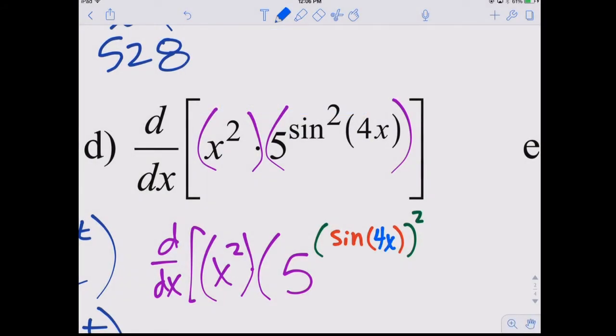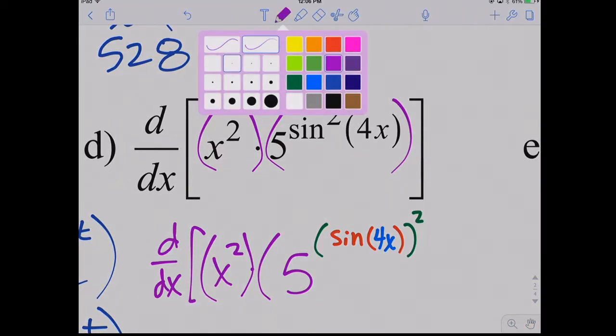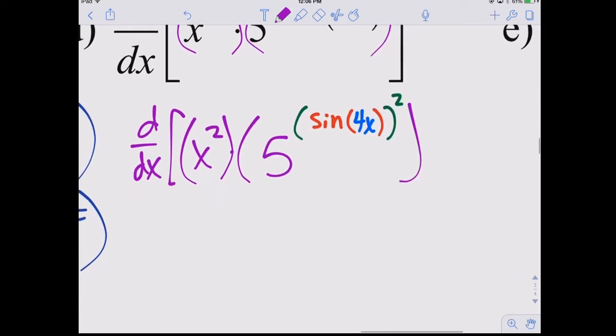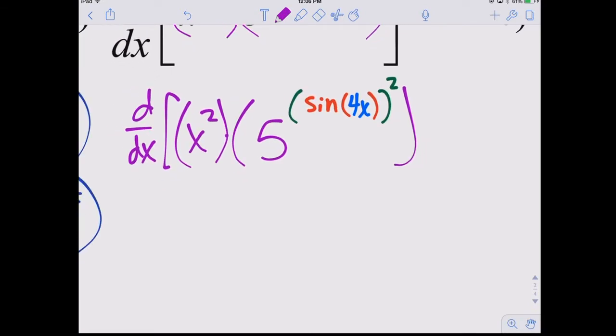So how many layers in that last one? You have the 5, 5 to the blob, the blob squared, the sine of the blob, and the 4x. There are four layers in that second factor alone. So rewriting it can help. Using different flavors can help, too.